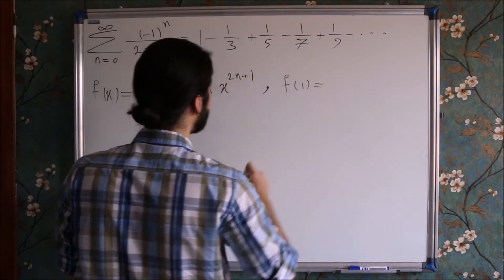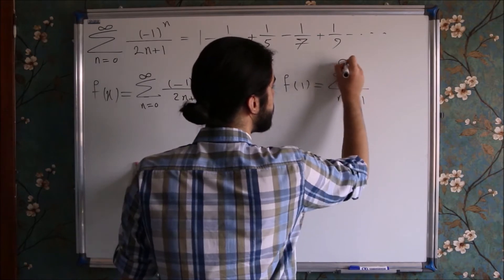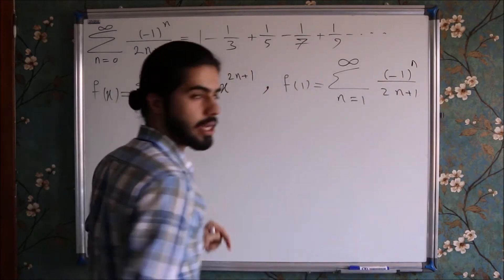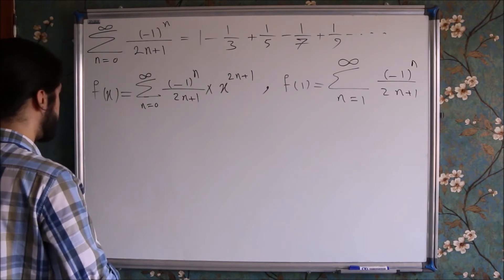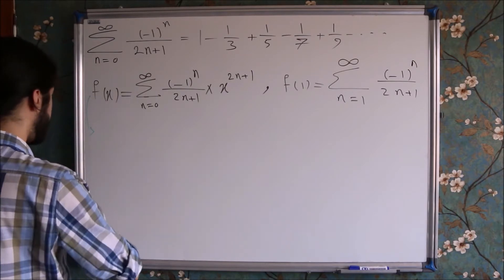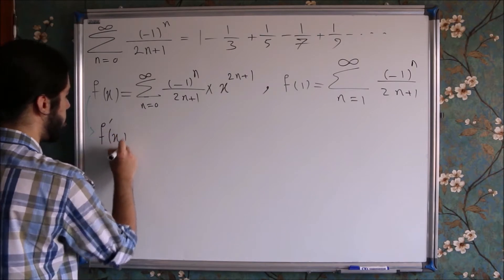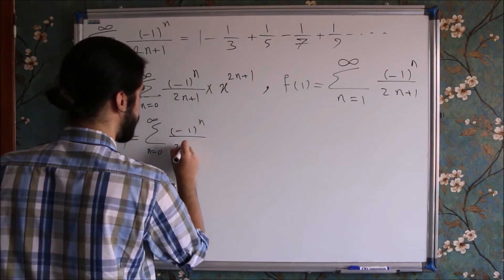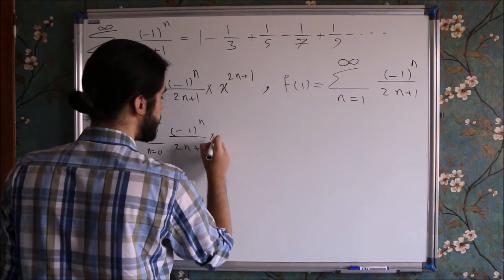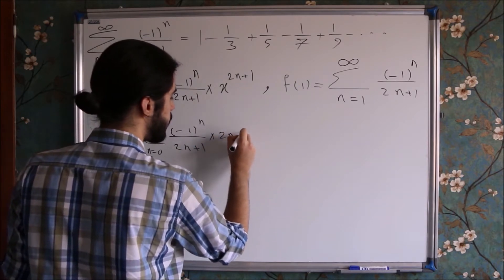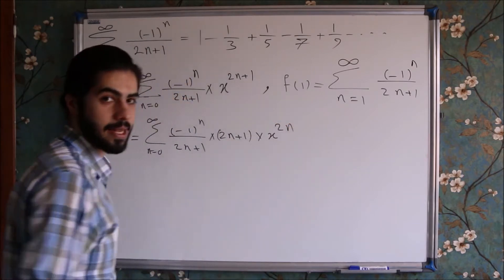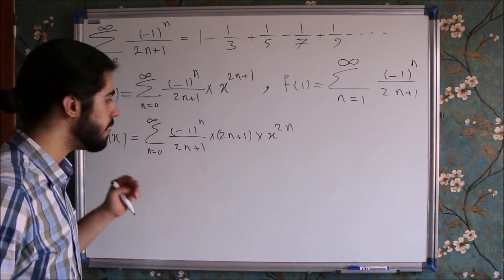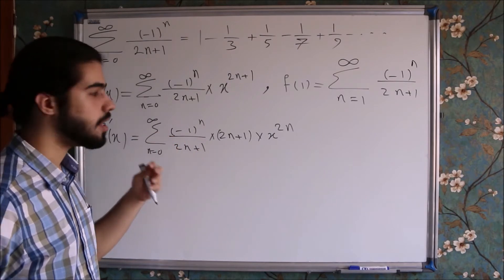Our main series is exactly this function when we put x equal to 1. Because f of 1 is nothing but our series. Now what if I take the derivative of both sides? f prime of x is the infinite sum of the derivative, which brings down 2 times n plus 1, times x to the power of 2n. So the 2n+1 in the denominator cancels out with the 2n+1 in the numerator.